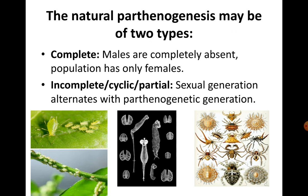The individuals may breed exclusively by Parthenogenesis with no sexual generation, or they might exhibit an alternation of sexual and Parthenogenesis generations. Based on this, Natural Parthenogenesis can be of two types: complete and incomplete. In complete Parthenogenesis, males are completely absent and the population contains only females. In incomplete or cyclic or partial Parthenogenesis, sexual generation alternates with Parthenogenesis generation, as seen in aphids, rotifers, and crustaceans.